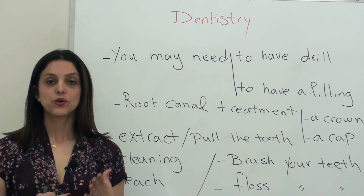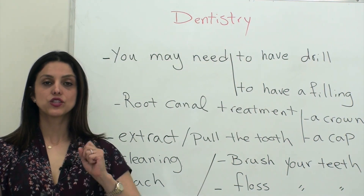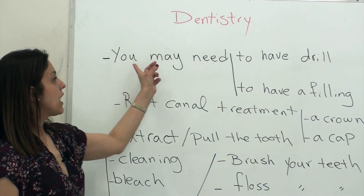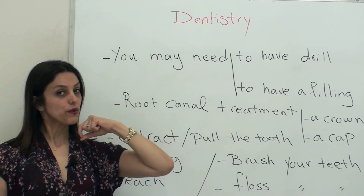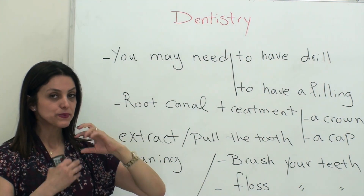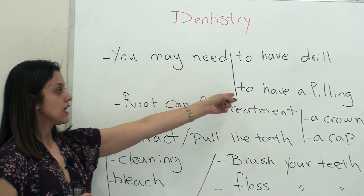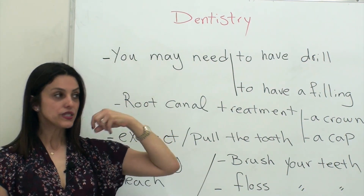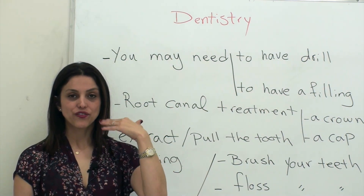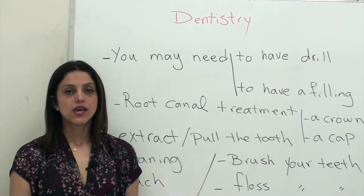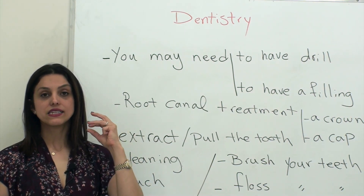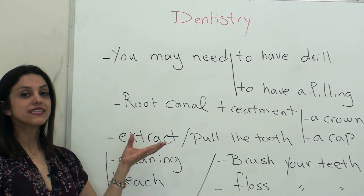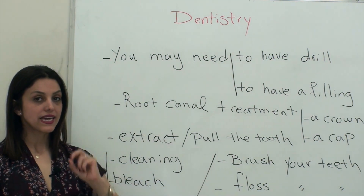After that, your dentist will start fixing your tooth. For fixing it, they have to drill your tooth. And you might need to have a filling after that drilling — a filling to fill your tooth. If it is very bad and it has damaged your roots, you might need to get a root canal treatment.